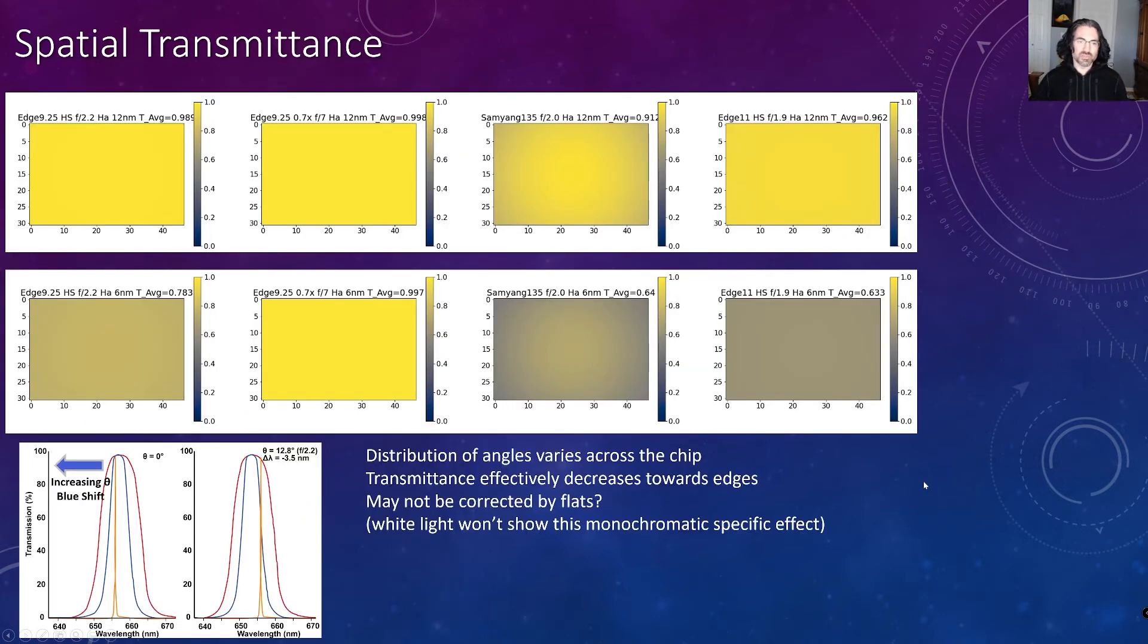One of the other outputs from the code that was used is that you can actually get a feeling of the transmittance at the chip. So here we're seeing transmittance as a function of location on the chip. And while when we look at some of our hyperstar configurations, we don't really see any drop off on the edges, when we look at this Samyang 135 millimeter filter, we can see that there is some drop off even for 12 nanometers. But most notably at the six nanometer filter, there's quite a bit of drop off.